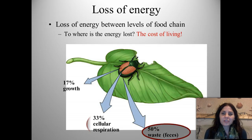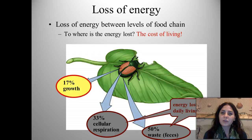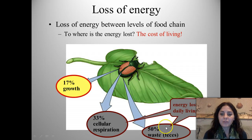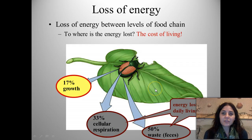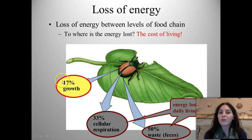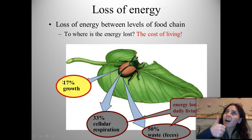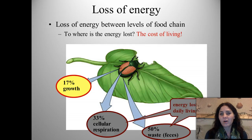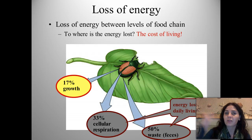So how is energy lost? Where does it go? If you look at the loss of energy at the different levels of a food chain, you see that about 50% goes to waste — feces, which is poop. 33% goes to cellular respiration, which is the cost of daily living for that organism. And 17% goes towards growth. This 17% is the only percent that can get passed on to the higher trophic level. So whatever eats the bug only gets 17% of what the bug was. Our rule of thumb is that 10% gets passed on at each level.